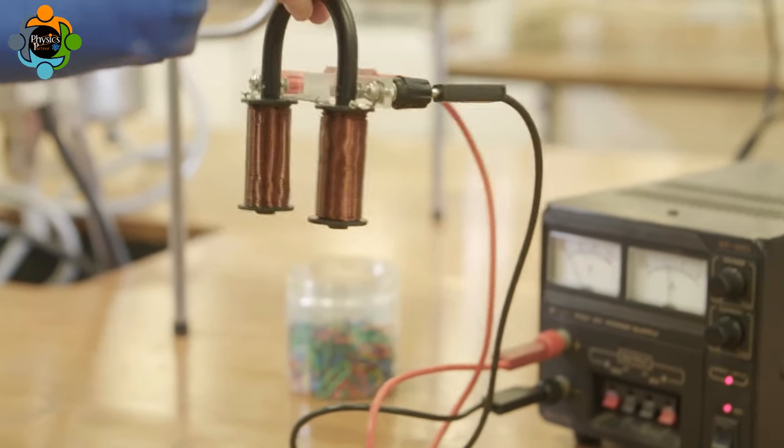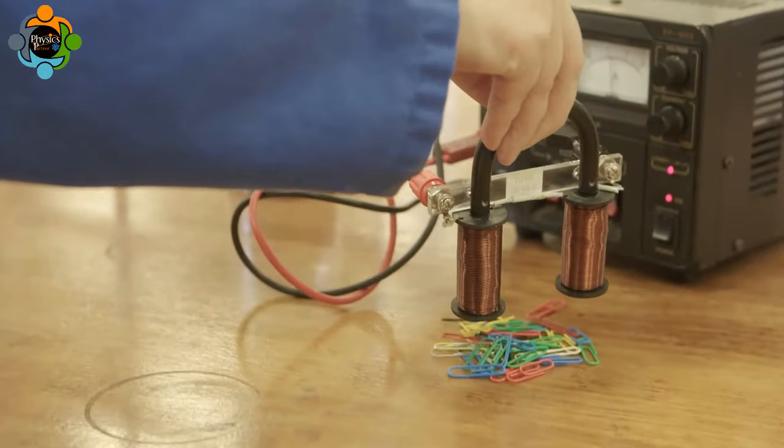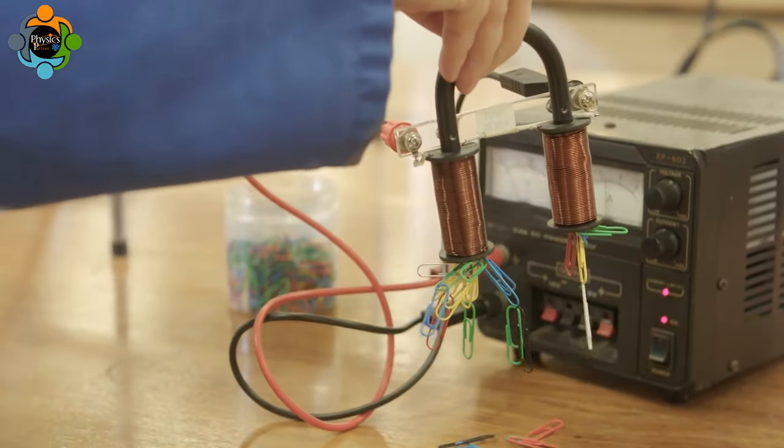This can be seen when the solenoid is connected to the battery, attracting iron filings or paper clips. When the current is removed, the paper clips fall off.